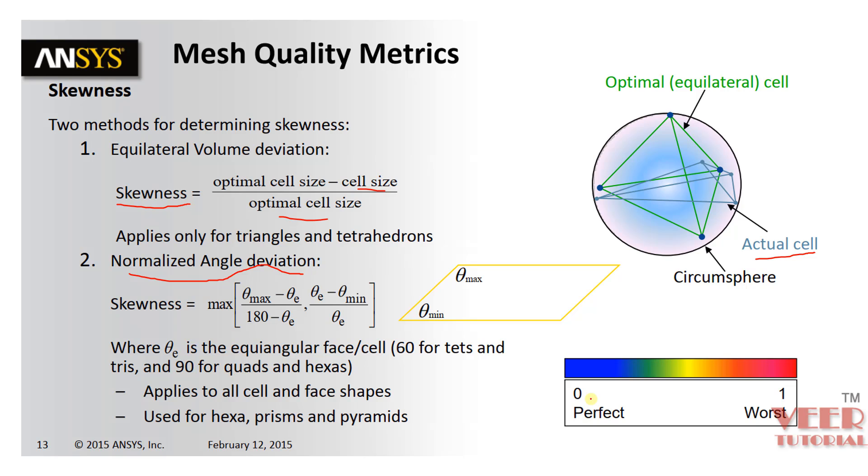So here again, zero. Now here in this case, if we get a zero value of skewness, it means this is a good quality of element and if its value is one, then it is worst quality.